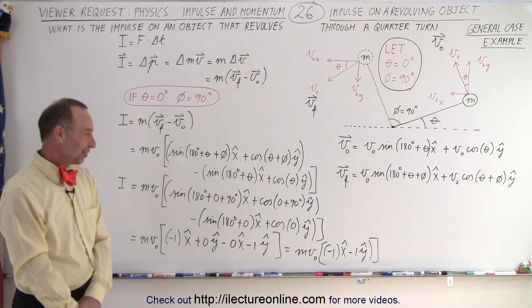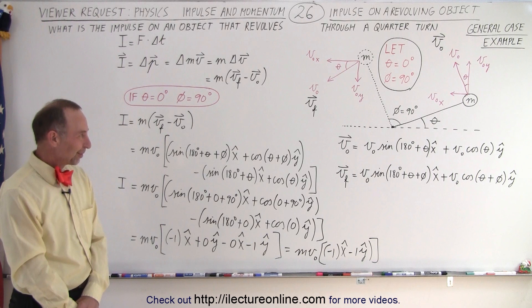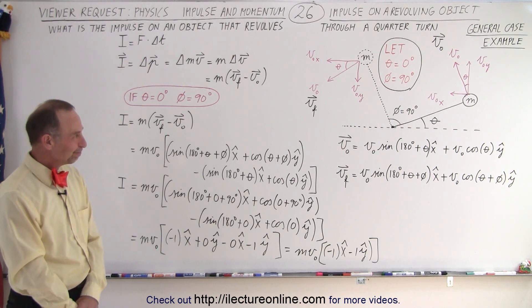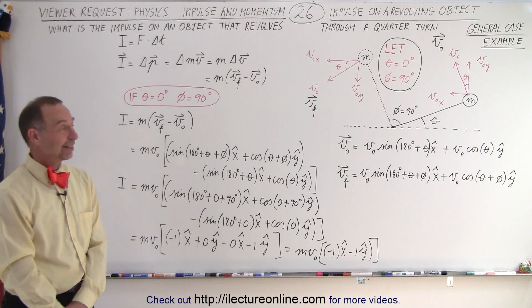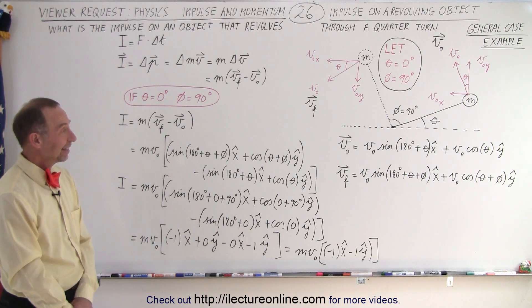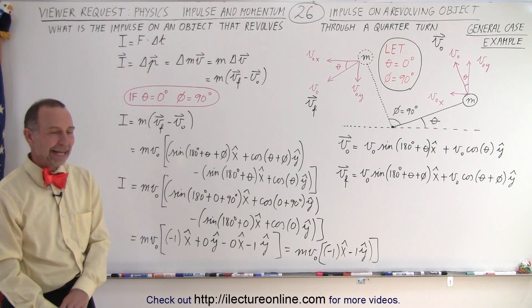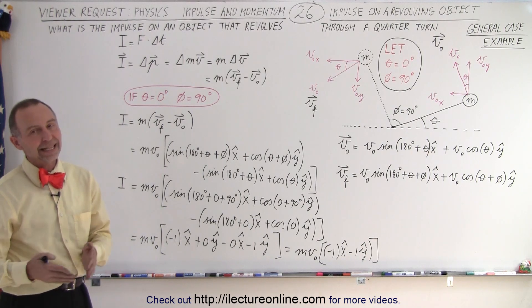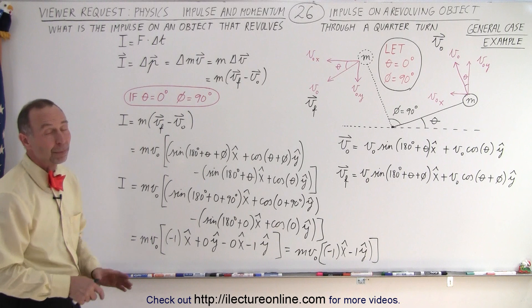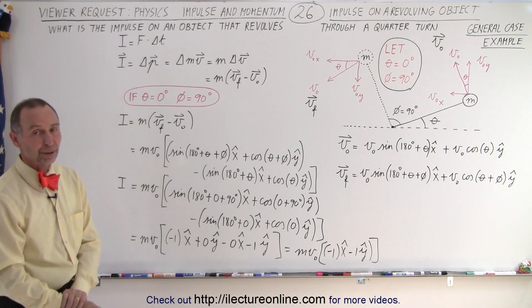Is it better to come up with the general equation if this was like a test question? Hmm. Well, that depends. I would say if the question read that it would be from any angle theta and any angle phi, then you probably better come up with the general equation first before you apply it.